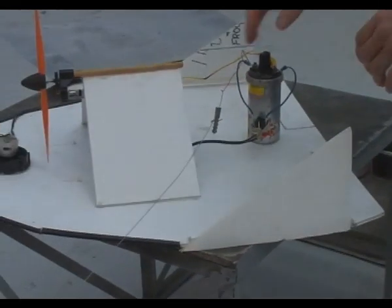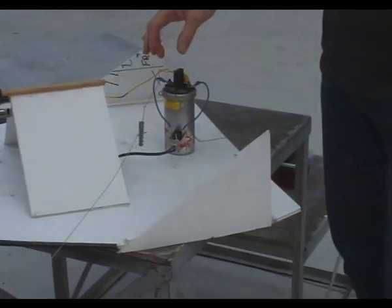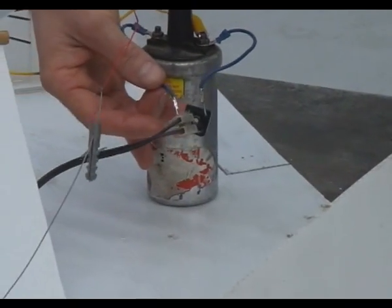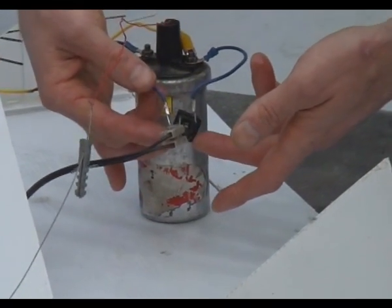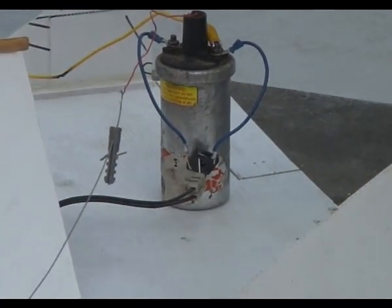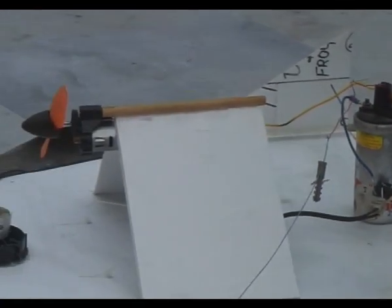This is actually very simple. This is just another automotive ignition coil that's stepping the voltage down, and it's stepping it down and then rectifying it through a bridge rectifier, and then straight to the motor, which is just a small DC motor.